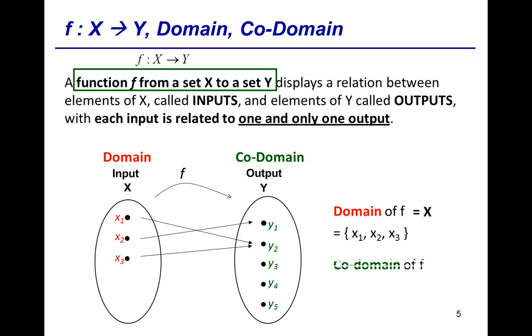And the codomain of f, which equals capital Y, can be listed out as the set of elements y1, y2, y3, y4, and y5.